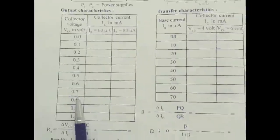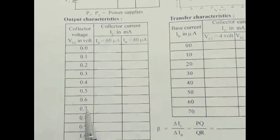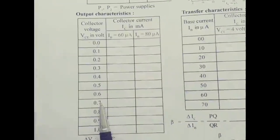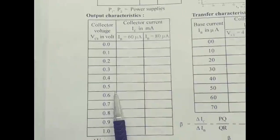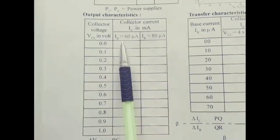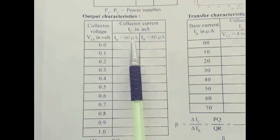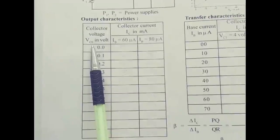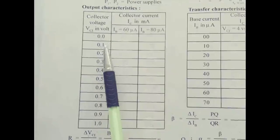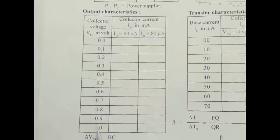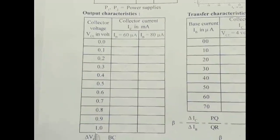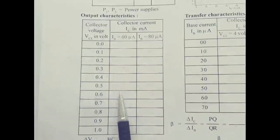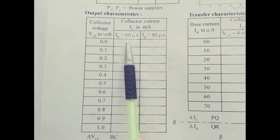This is the tabular column to study the output characteristics and hence to calculate output resistance. Initially, we have to fix the input current at 60 microamps constant, for which we vary the output voltage in steps of 0.1, 0.2, 0.3 V up to 1 volt. The corresponding collector current in milliamps should be recorded. This is for the first trial.